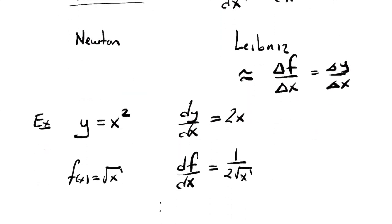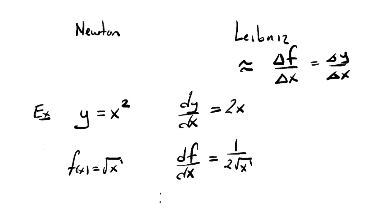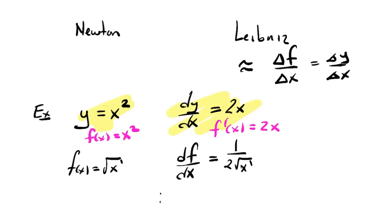Both notations have stuck around because they facilitate different kinds of computations, so you can't get away with knowing only one. In Leibniz notation: d over dx of x squared equals 2x, and d over dx of square root of x equals 1 over 2 times the square root of x — the same results we computed earlier. We've got one more video in this section covering higher derivatives and at least a peek into one of their applications in physics. It'll be shorter than this one. Thanks.